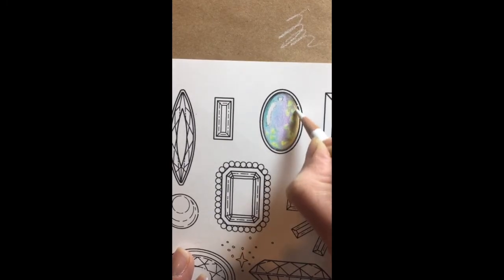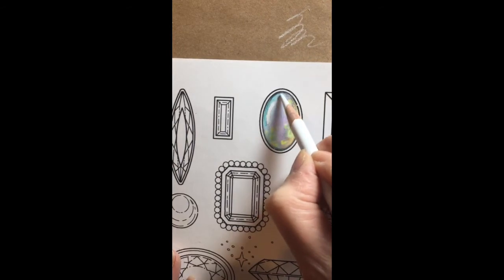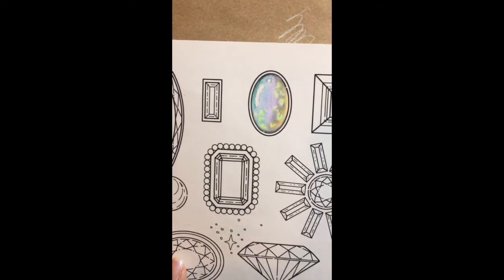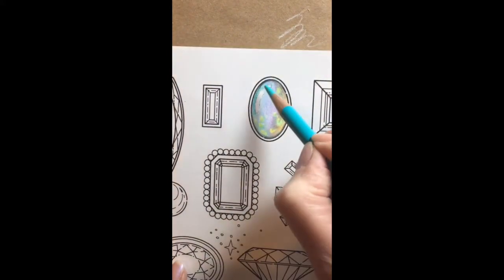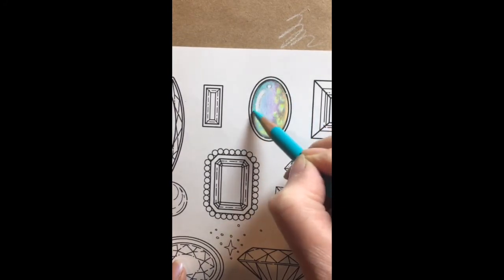I don't want to use the white everywhere or I will lose the intensity of some of the colors so I'm just kind of picking and choosing a few places to blend together. And then I will need to go over some of them again a little bit more with some of my more intense colors to bring them back up.